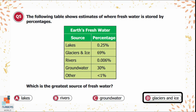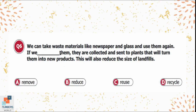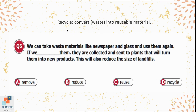Glaciers and ice are the greatest source of fresh water because 69% of all fresh water is stored in that form. Question 6: We can take waste materials like newspapers and glass and use them again — they are collected and sent to plants that turn them into new products, which also reduces the size of landfills. The options are: remove, reduce, reuse, or recycle. Recycle means converting waste into reusable material, so option D is correct.